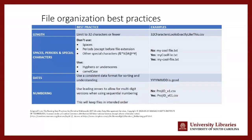Another important file naming best practice has to do with numbering, particularly version numbers. The best practice is to use leading zeros to allow for multi-digit versions when using sequential numbering, which keeps your files in the intended order. For example, instead of "project_ID_v1," use "project_ID_v01" — that way, when you have 12 different versions, they'll continue to display in sequential order.